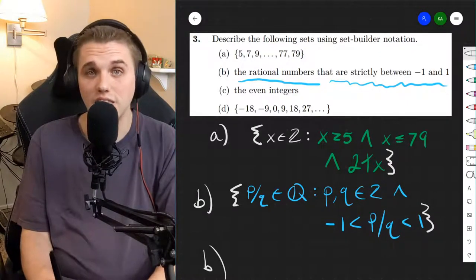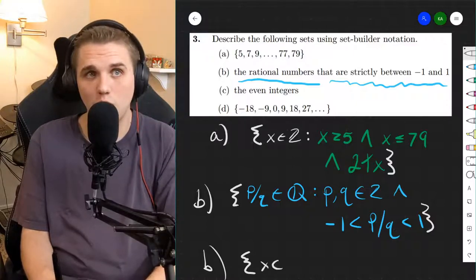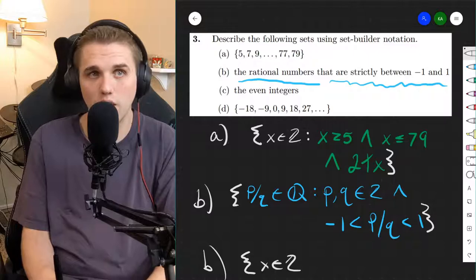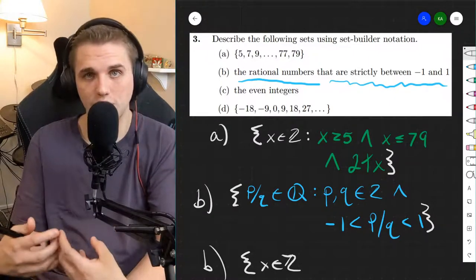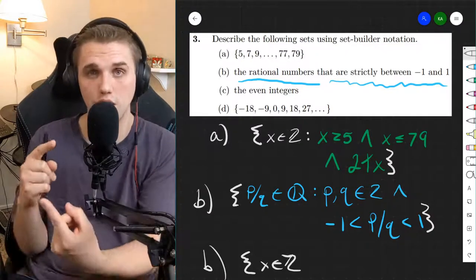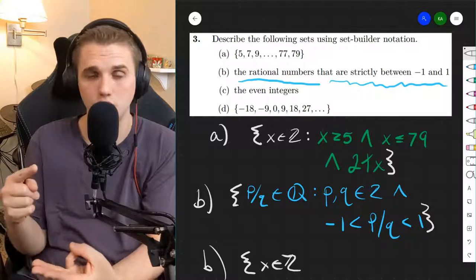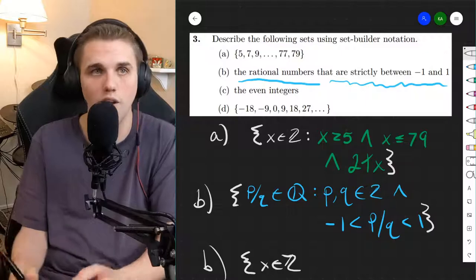All right, so let's do the next one, part C, the even integers. First, we need to establish that we're working over the integers. That's the universe that we exist in. The integers is a pre-established set. And you're allowed to pull from any of the universes: the rational numbers, integers, complex numbers, real numbers, irrational numbers, prime numbers, and so on.